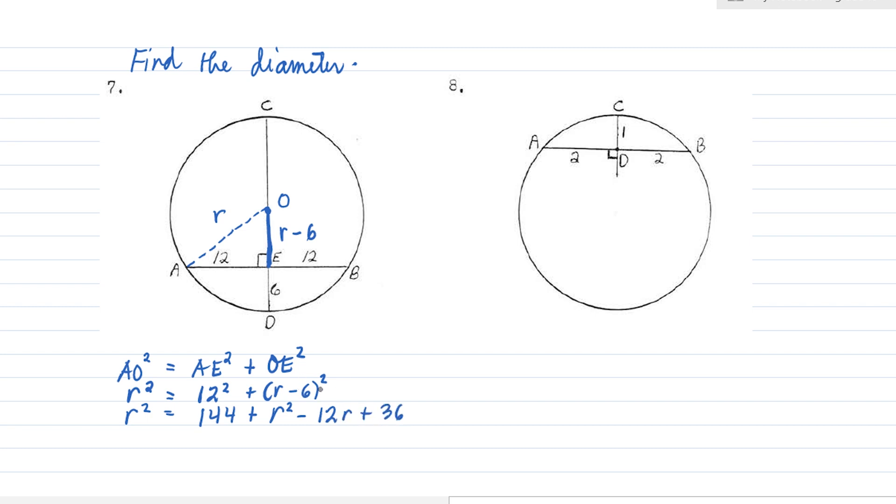You got it, right? This is just expanding. So, it equals R minus 6 times R minus 6. So, this is the result. Now, if you notice, both sides have R squared, so cancel that.